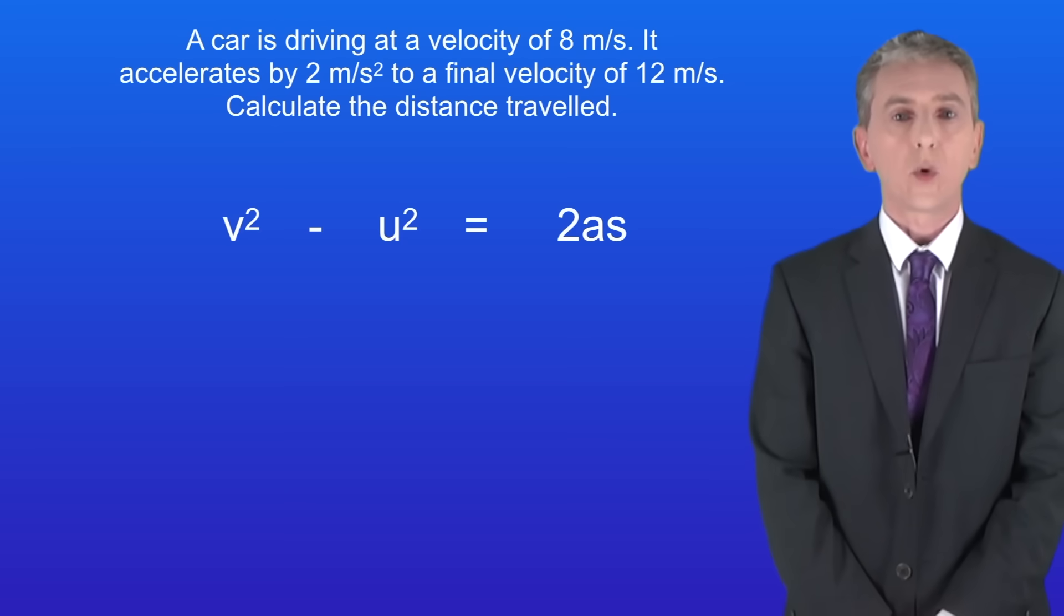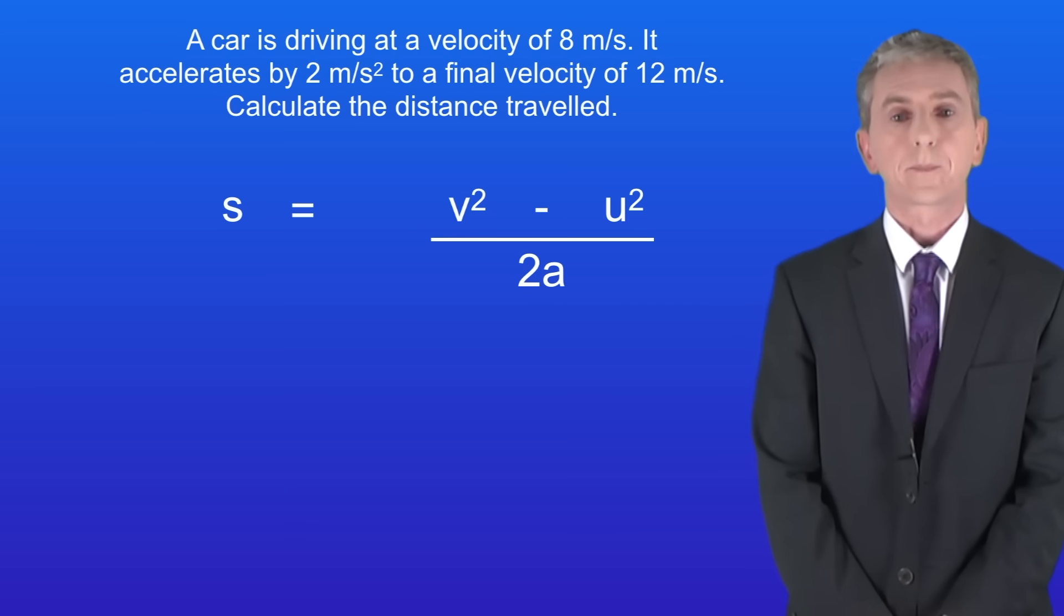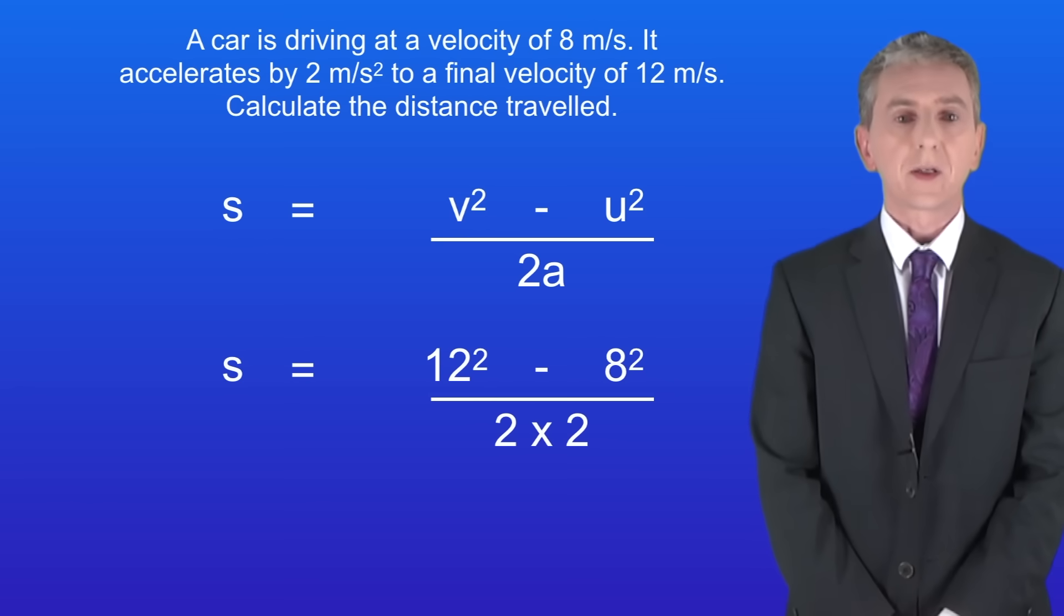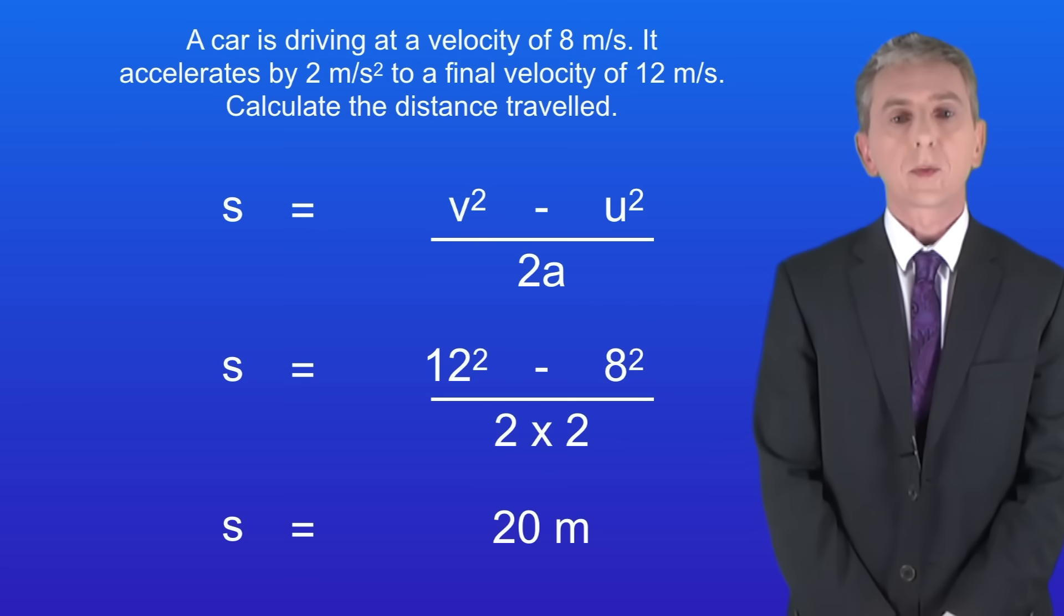Ok so here's the equation and we're calculating the distance. To do that we need to rearrange the equation like this. The final velocity was 12 metres per second and the initial velocity was 8 metres per second. The acceleration was 2 metres per second squared. Putting these numbers into the equation gives us a distance travelled of 20 metres.